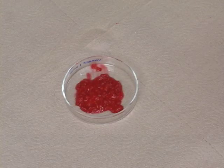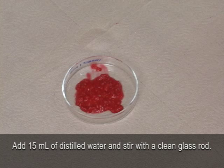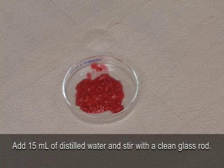Step 2. Add about a tablespoon of distilled water to the crushed berries and stir with a clean glass rod.